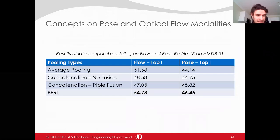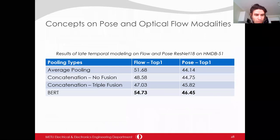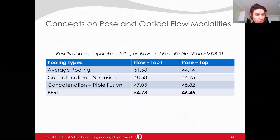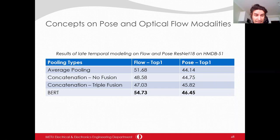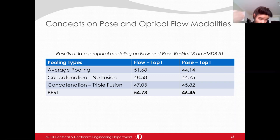Picking some concepts from the late temporal modeling and fusion studies: BERT was not the best for RGB modality but is the best for both flow and pose modalities. Another interesting point is that concatenation is even worse than average pooling for flow modality, and triple fusion makes concatenation even worse for flow modality. The performance of these concepts depends on the input modality.